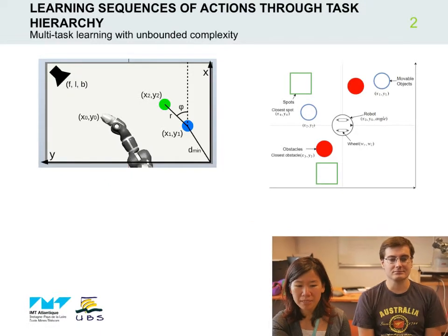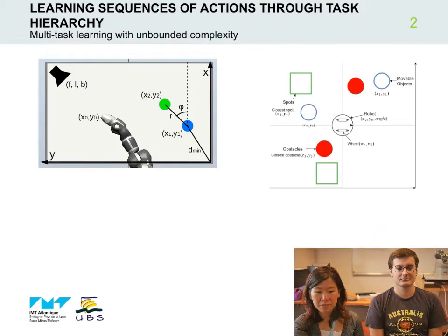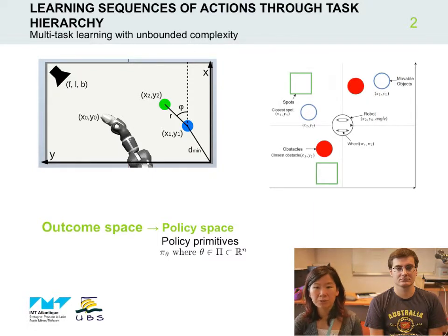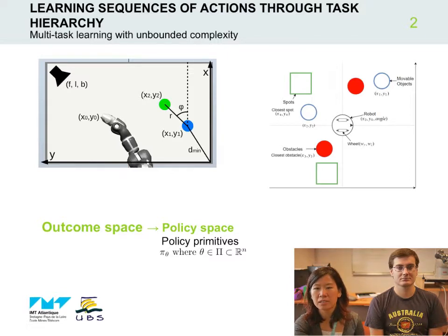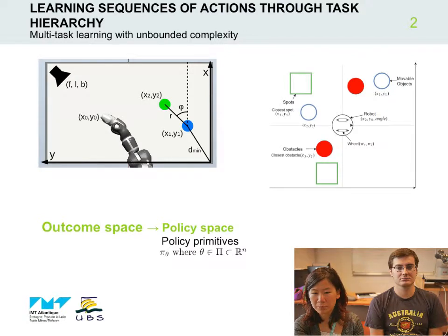Classically, previous works have been looking at how robots can learn this mapping from an outcome space and a policy space. They've been using for the policy space policy primitives, which are parametrized functions with a parameter theta that is of dimension n.